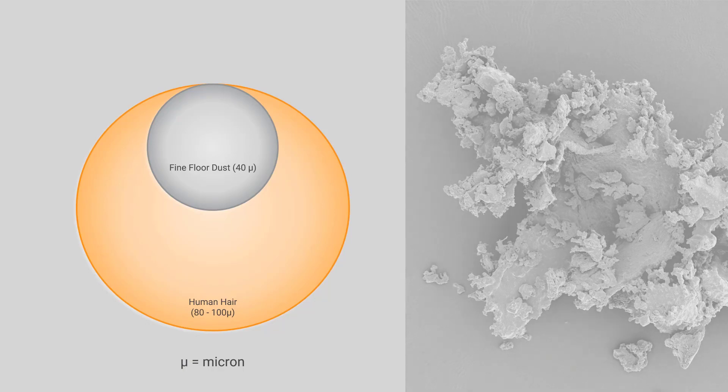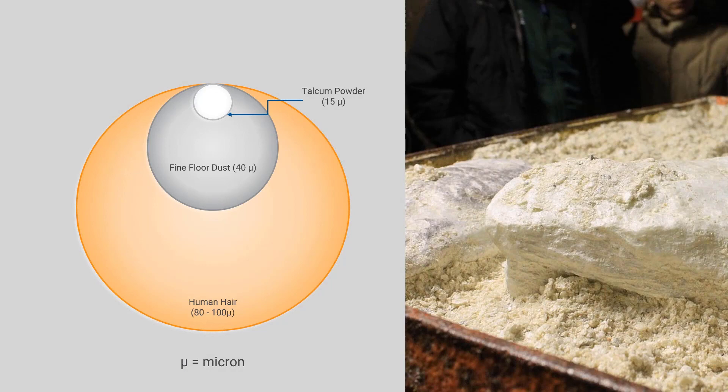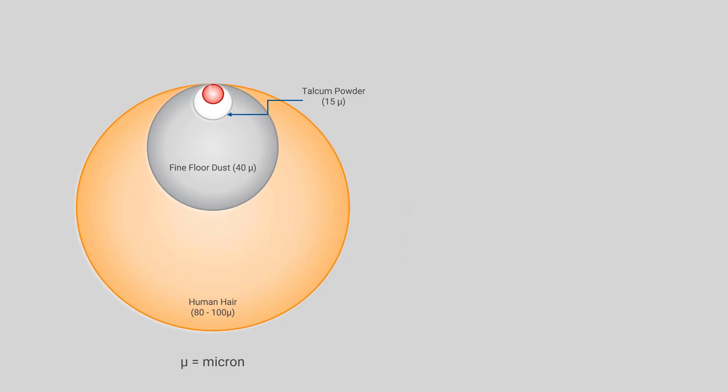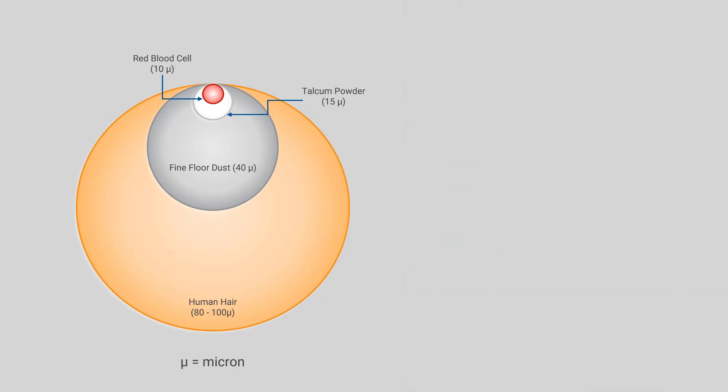Beyond that, we get into talcum powder, something like baby powder. That's typically milled down to 15 microns. A red blood cell is somewhere around 10 microns or 5 microns. And then bacteria is down at 3 microns in size.